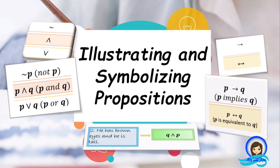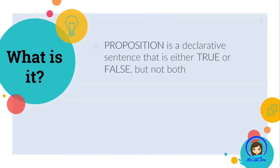First, let us define what a proposition is. A proposition is a declarative sentence that is either true or false, but not both. Take note, a proposition is a declarative sentence. That means if a given sentence is in imperative form, exclamatory form, or in interrogative form, it is not a proposition.